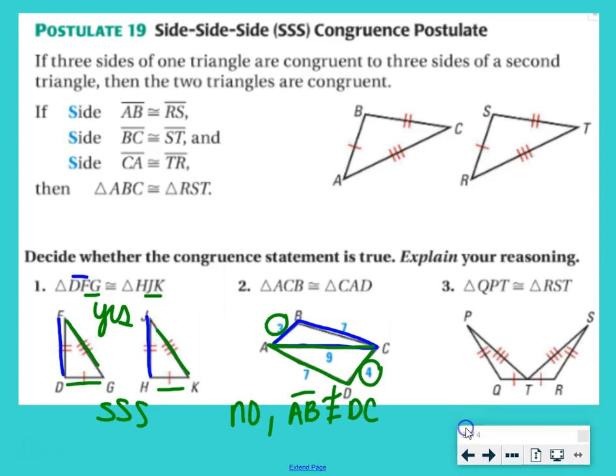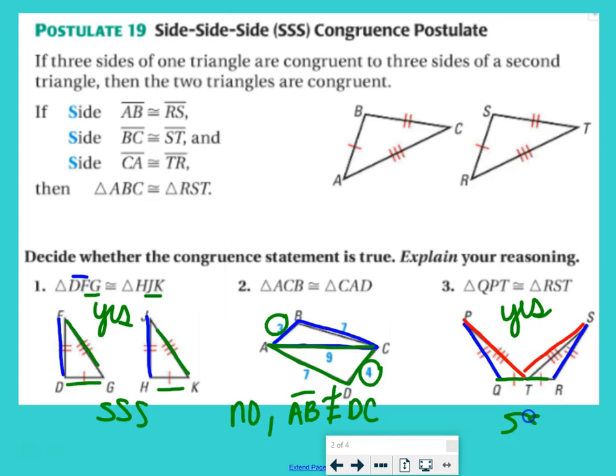Lastly, we have example three, triangle QPT is congruent to triangle RST. QP and RS need to be congruent, which they are, two tick marks. PT needs to be congruent to ST, which they are. They both have three tick marks. And then, TQ would need to be congruent to TR, which they are. So, we would say yes, and our reasoning would be side, side, side congruence postulate.